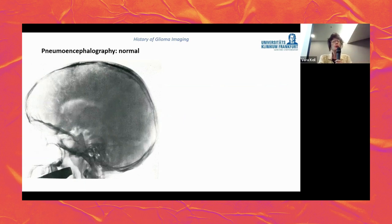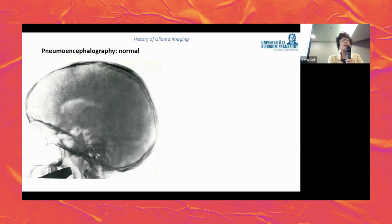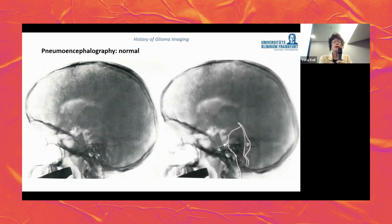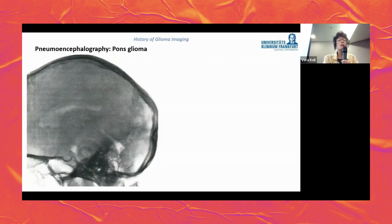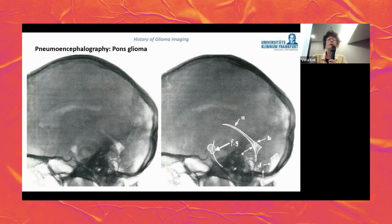Here is a very old pneumoencephalography image from a normal patient — you can see the air in the ventricles and in the basal cisterns, delineating the ventricles and part of the brain stem, including the fourth ventricle. In a patient with a pons glioma, the air in front of the tumor and the fourth ventricle behind the tumor allows indirect visualization of this glioma, with no obstructive hydrocephalus present.